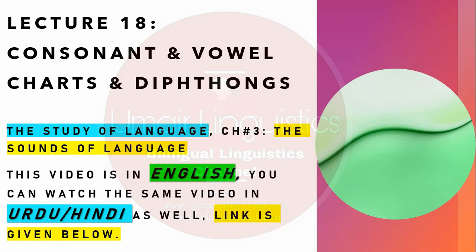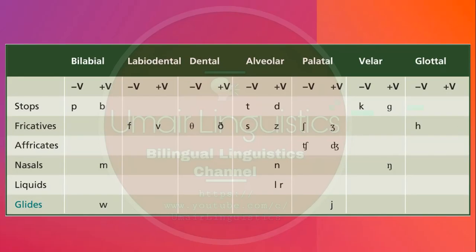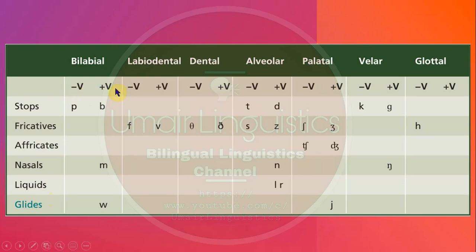So let's start. In the previous two lectures we discussed the manner of articulation as well as the place of articulation. In this table you can see along the top we have place of articulation, and at the left we have manner of articulation. Moreover, voiceless and voiced distinction is also mentioned. These are all the consonants which occur in almost all different varieties of English.